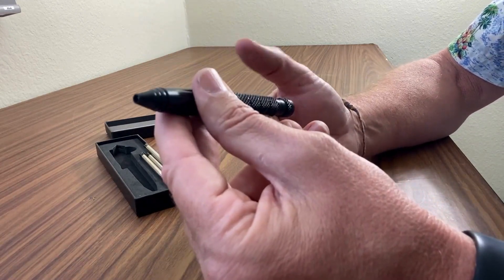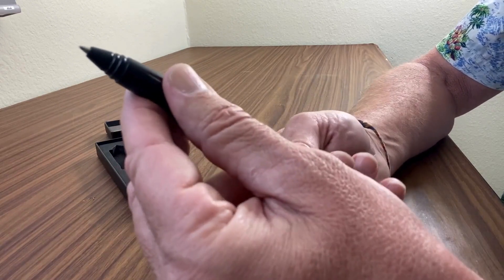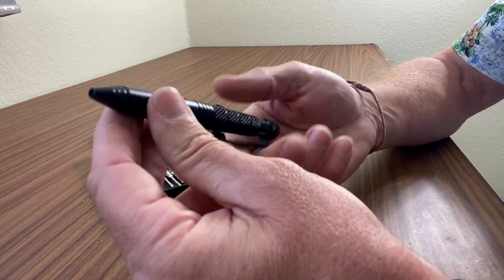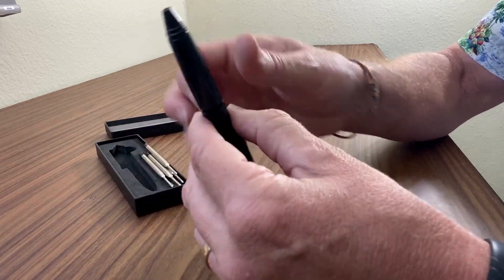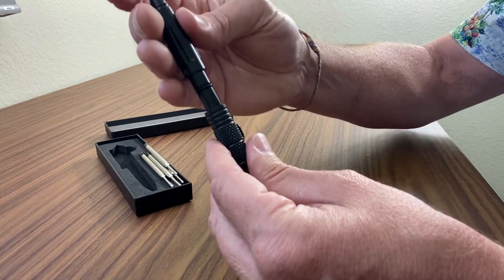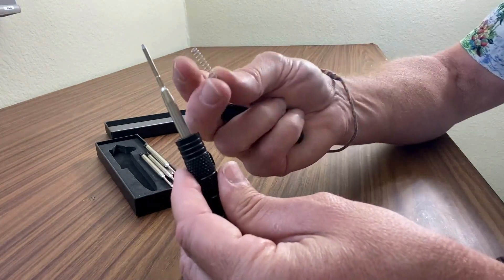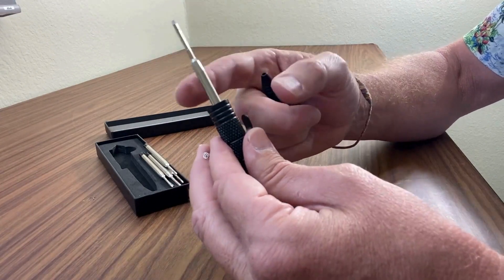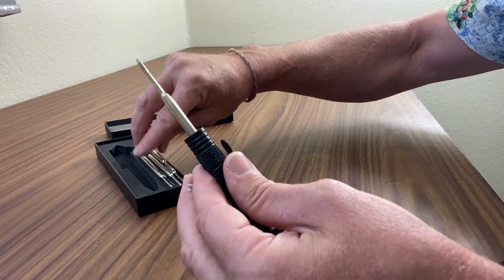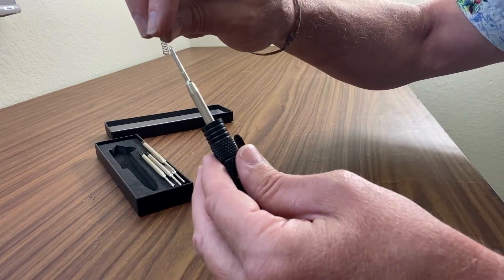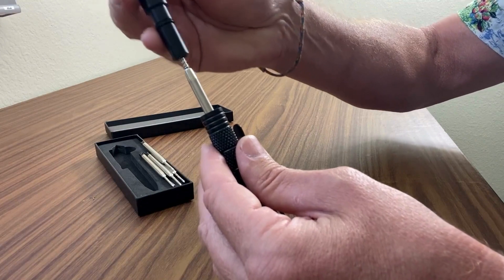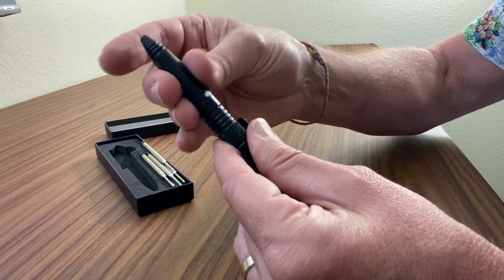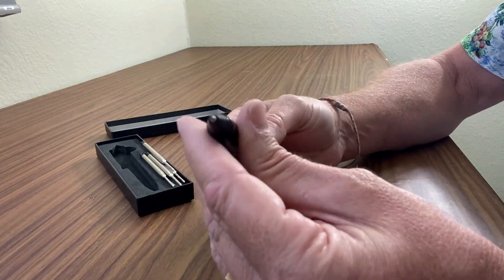You twist the end here to get the writing tip to come out. If you turn it the other way, you unscrew the bottom part of the barrel here. A little loose spring in here, and here's the ink cartridge, so then you can just swap that with one of the other ink cartridges that it comes with. Let me put it back together, just slide that in there and screw it back on. That's how to change the ink.